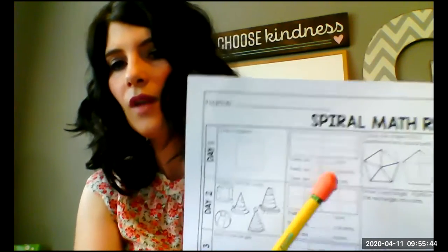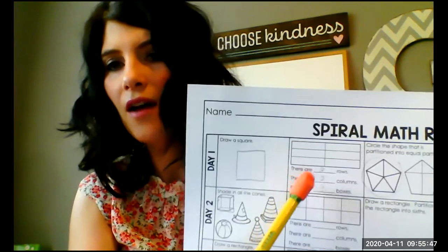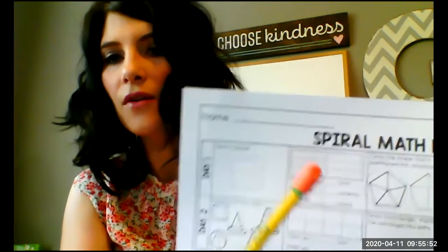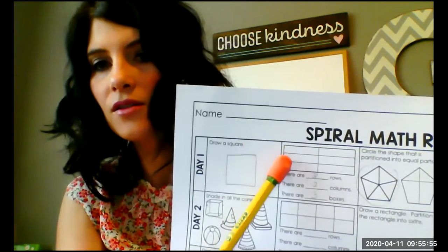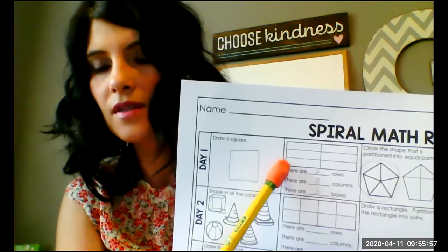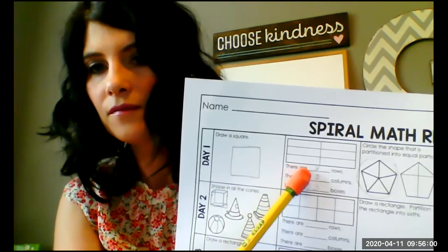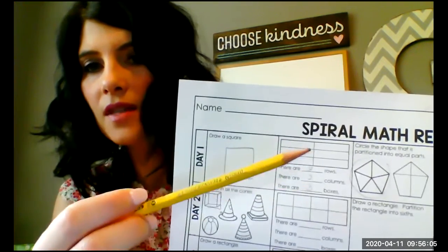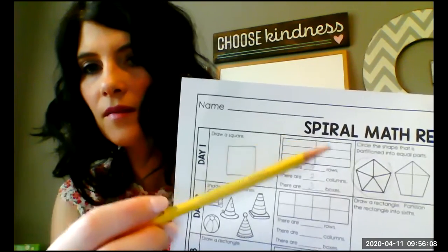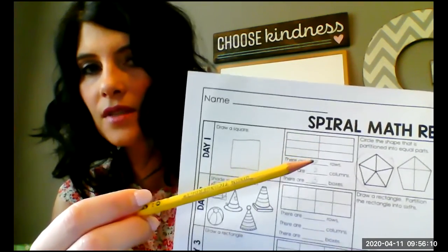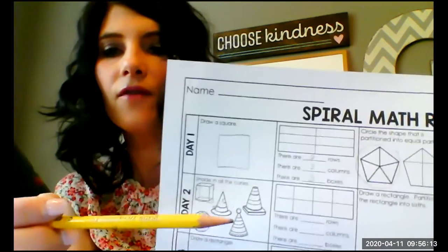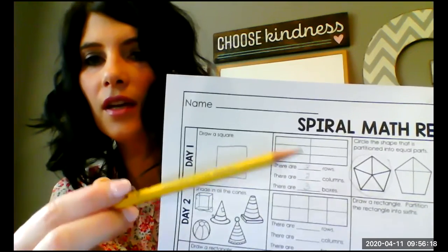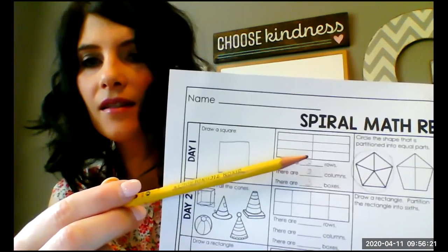On the next one, it says there are how many rows, how many columns, how many boxes. If you look closely, I see one, two, three rows, so you should have put a three there. And how many columns do we have? Remember your columns go up and down — this is one column, this is two columns. So two columns. And then for boxes, we have one, two, three, four, five, six boxes.